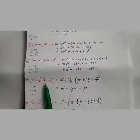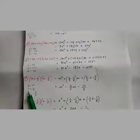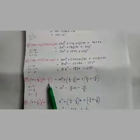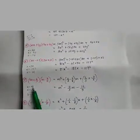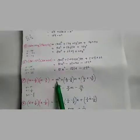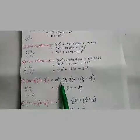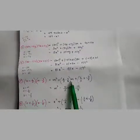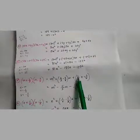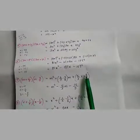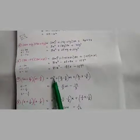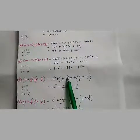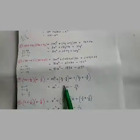Now we will solve 7th question: (m + 2/3)(m - 7/3). Here m is x, x is equal to m, a is equal to 2/3 and b is equal to minus 7/3. I have written the values here. We will put these three values into the formula: m² + (a+b)m + a×b. For a+b: 2/3 + (minus 7/3). The denominator is the same, so we can directly add numerators: 2 minus 7 is minus 5, giving minus 5/3.